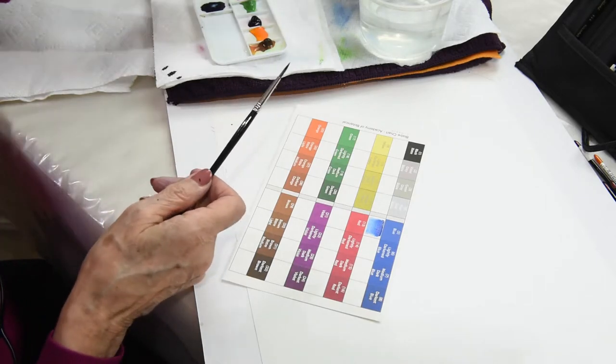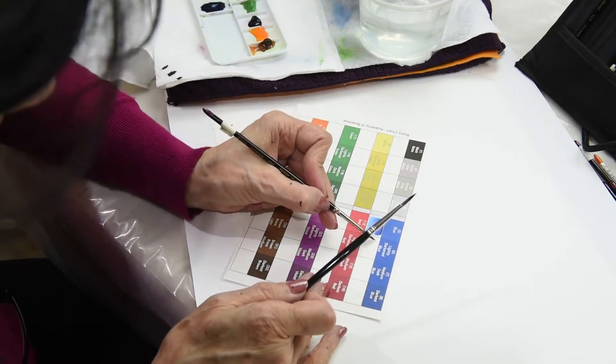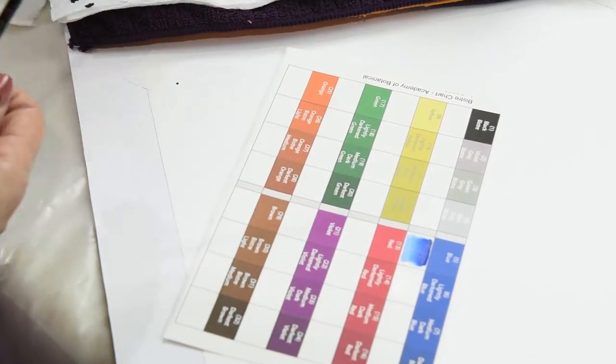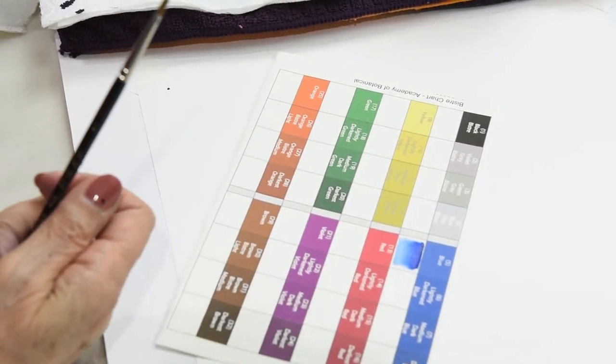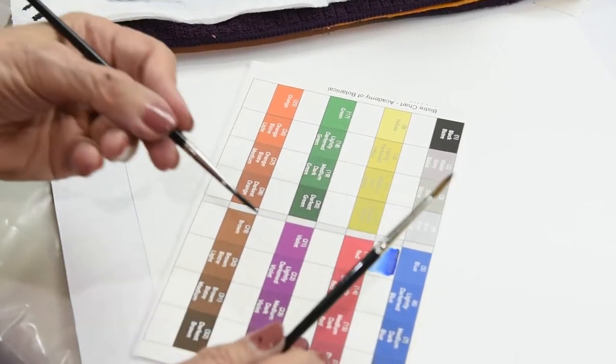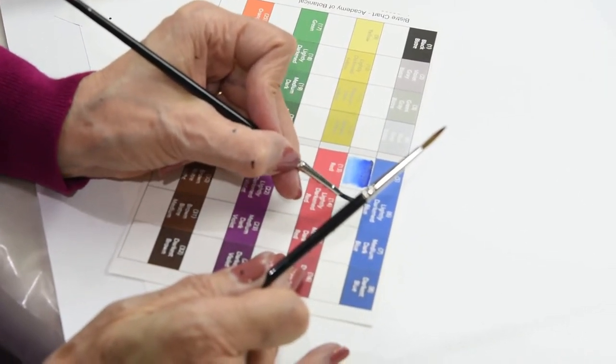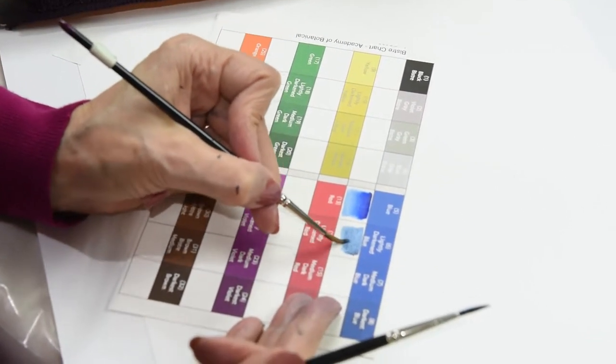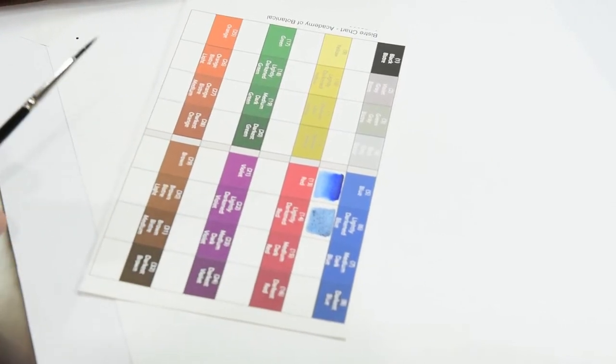And now I'm going to move to the next box and I'm going to add just a little bit of bistra to change the value. And that's what I want to do. I want to change the value. And here it is. I've darkened it a little bit.